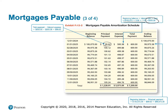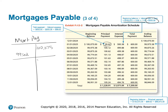After that first payment, the mortgage payable T-account — originally credited for $100,075 — is debited $99.62, leaving a balance of $99,975.38. Multiplying that new balance by 6% × 1/12 gives interest of $499.88 for the next payment, with $100.12 going toward principal. We recalculate the ending balance each month and continue in this manner.